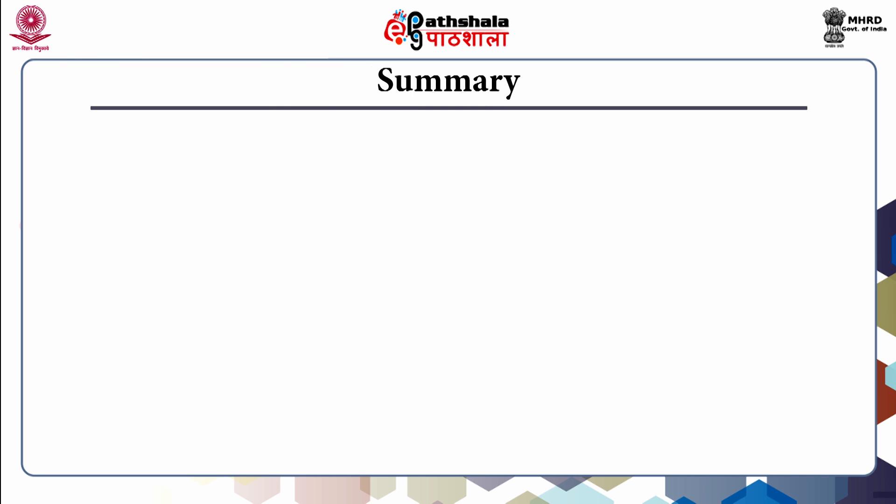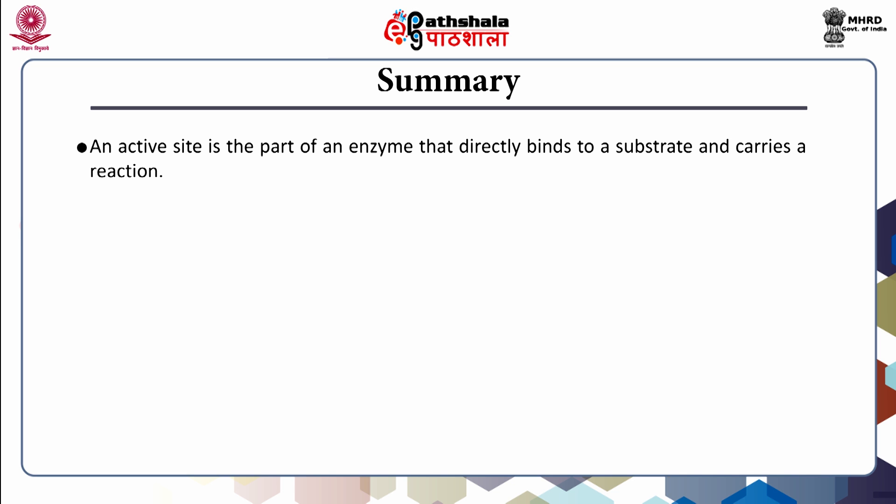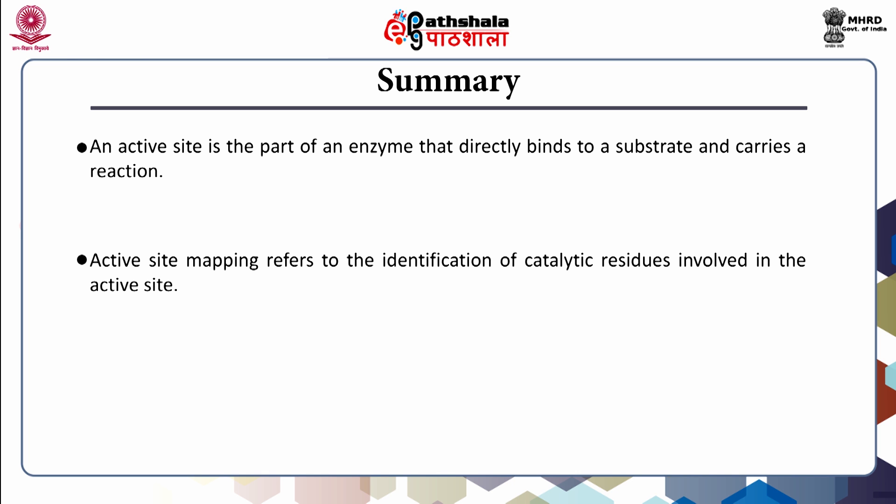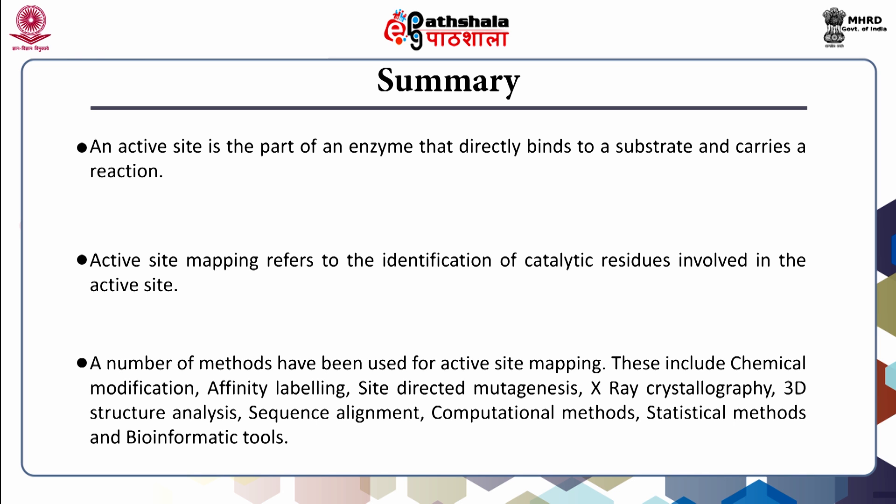To summarize the whole lecture, an active site is the part of an enzyme that directly binds to a substrate and carries out the reaction. It contains amino acids that promote formation and degradation of the bond. The amino acid residues are called the catalytic groups. Active site mapping refers to the identification of catalytic residues involved in the active site. A number of methods have been used for active site mapping, including chemical modification, affinity labeling, site-directed mutagenesis, X-ray crystallography, 3D structure analysis, sequence alignment, computational methods, statistical methods, and bioinformatic tools.